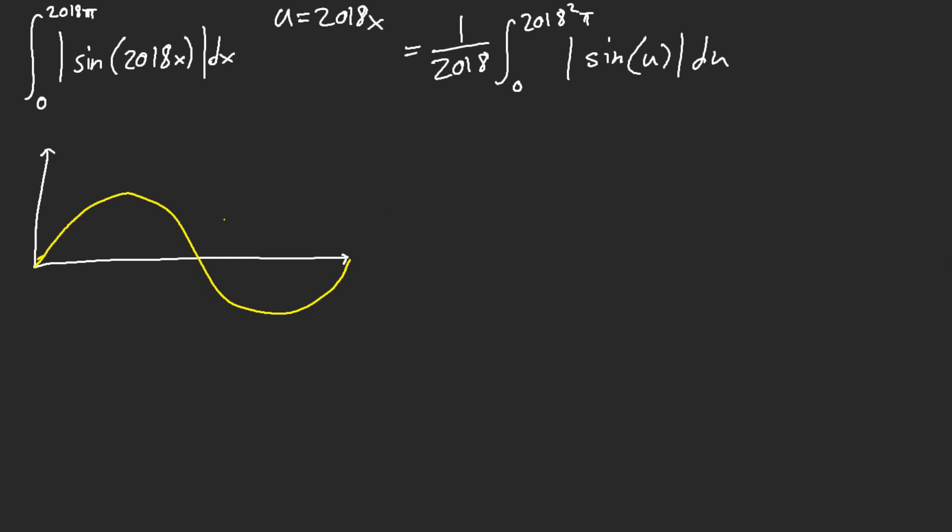Okay, there you go. So, this is the graph of sine of x, right? This is from 0, and this is from 2 pi.